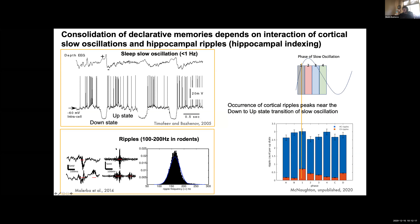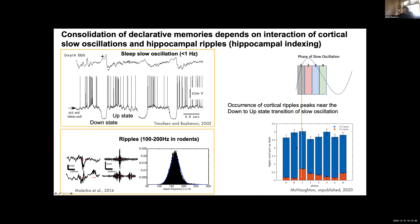To discuss this, I need to mention another type of activity called ripples. Ripples are very high frequency events — originally found in the hippocampus, but also in cortex and thalamus. In rodents they're at a very high frequency; in humans somewhat slower. This is actually the only experimental plot I'm showing, based on Bruce McNaughton's data. It shows that cortical ripples tend to happen at the beginning of the upstate. The sine wave represents the slow oscillation — upstate, downstate, upstate, downstate. If you count cortical ripples along the phases of the upstate, they mainly like to happen at the very beginning. That's important.